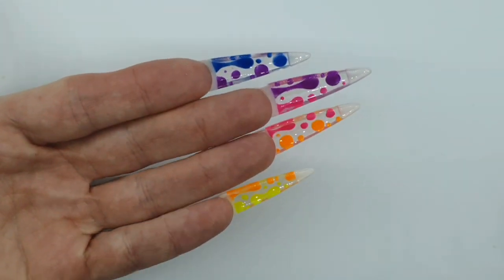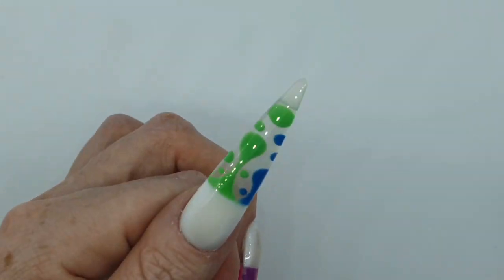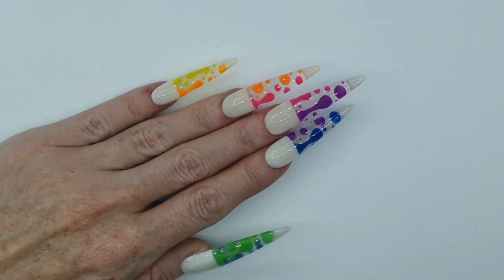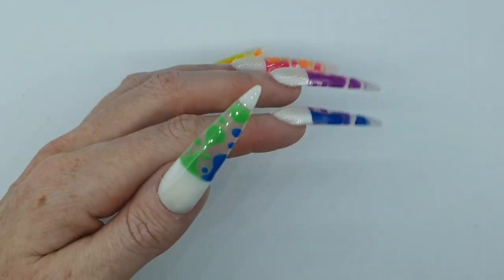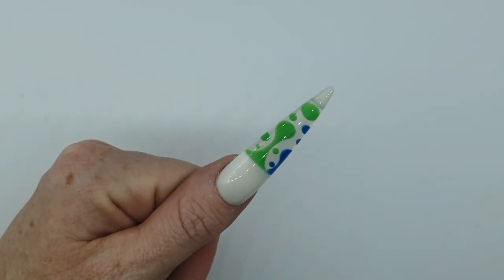And then that's it guys. That is your glow in the dark 3D encapsulated lava lamp nails. They look amazing in the light and in the dark.